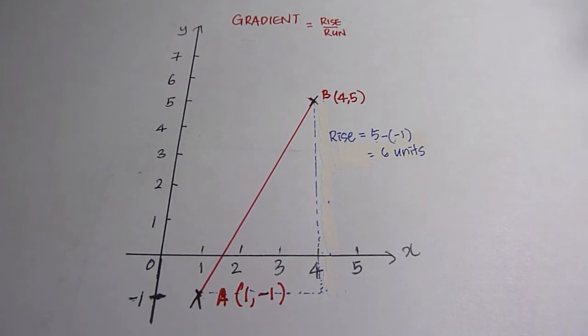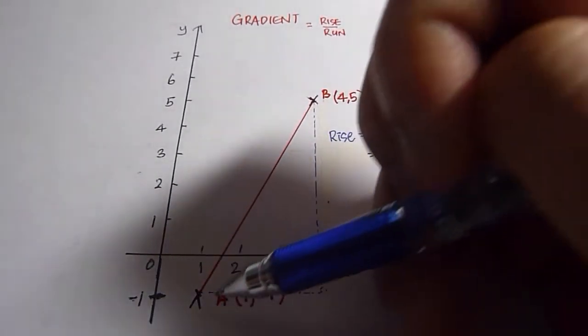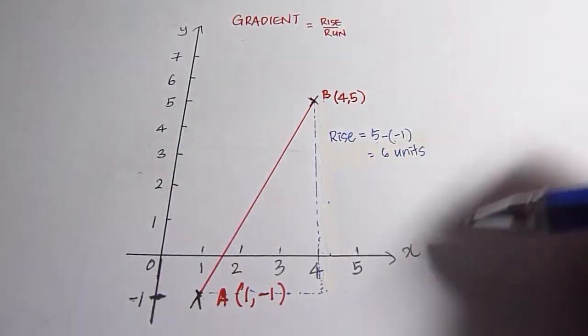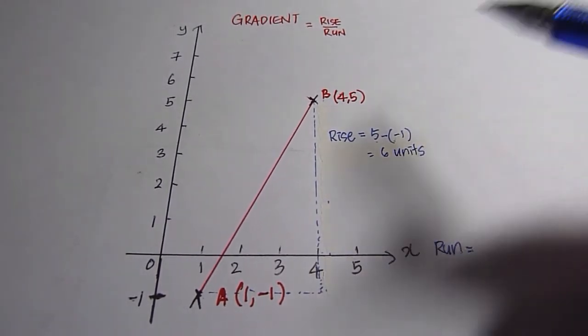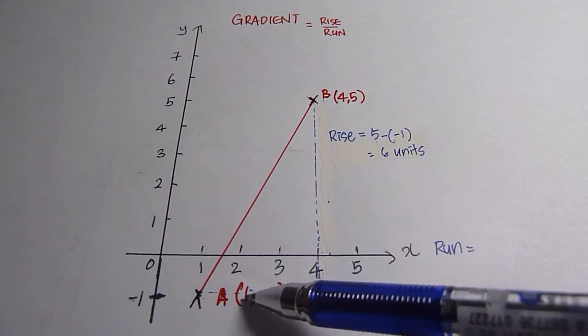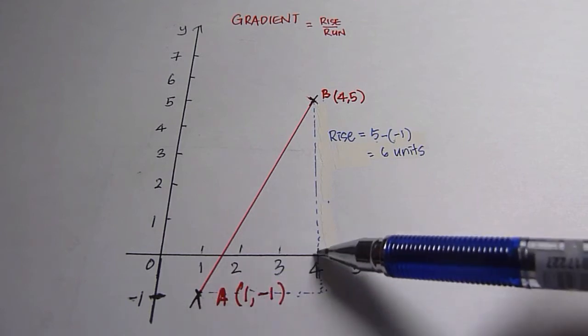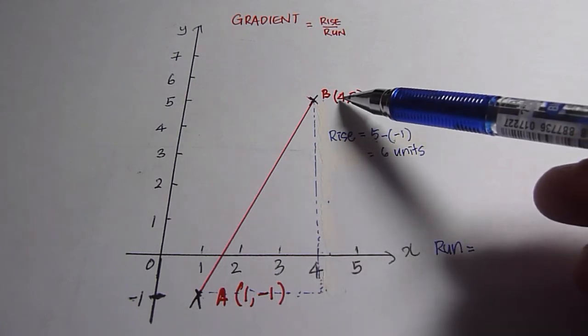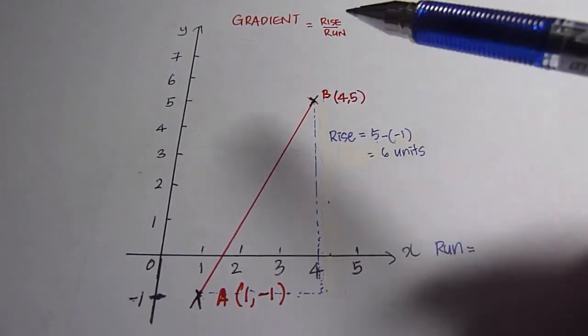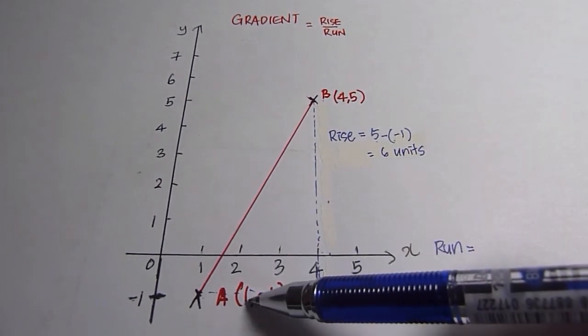Now, let's look at the run. The run is one, two, three, three units, which is the same as using the x-coordinate of B minus the x-coordinate of A.